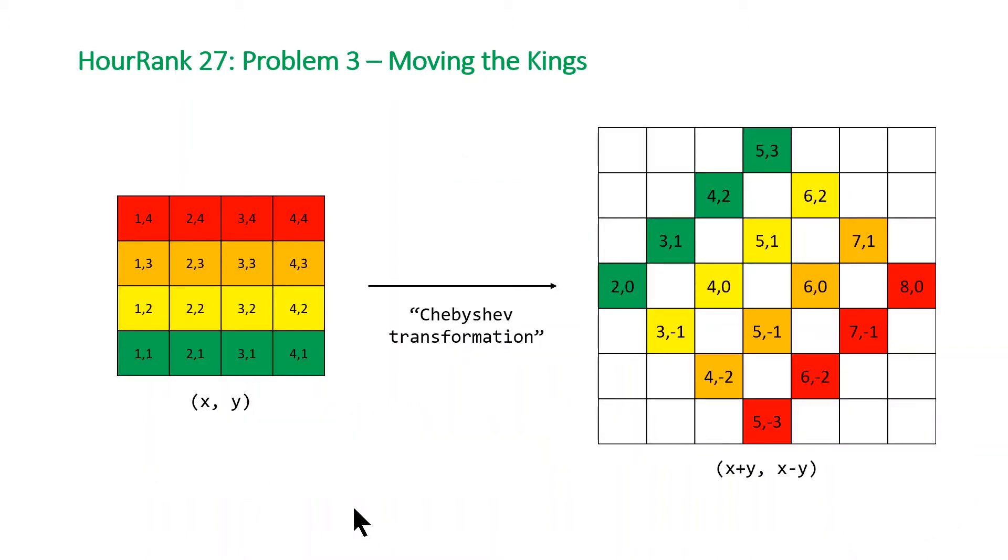So this is a diagram that's very similar to what was in the HackerRank editorial, but it provides a little bit more information. What we have here on the left is a two dimensional grid. So this would be a simplified chessboard that we have. Our X and Y coordinates 1, 1 in the bottom left and 4, 4 in the top right. What the HackerRank editorial is trying to tell you is that if we apply this Chebyshev transformation to the coordinates, we end up with something like this. What is the Chebyshev transformation?